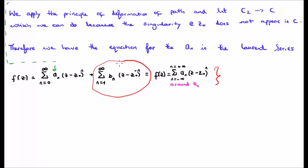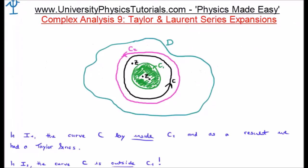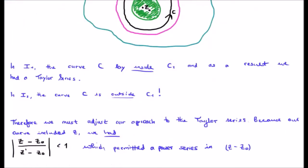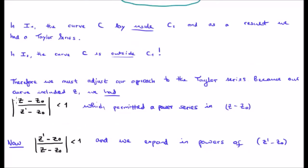In our Laurent series we have the a_n's for positive n values and the b_n's for negative n values. We just found that this particular integral is our Taylor series. What we have left to evaluate is integral c1, the inner integral in green. In integral 1 the curve c lay inside c2, giving a Taylor series. However in integral 2 involving the green contour c1, the black contour c is outside of c1. Therefore we have to adjust our approach, and we're going to expand in powers of z prime rather than z.